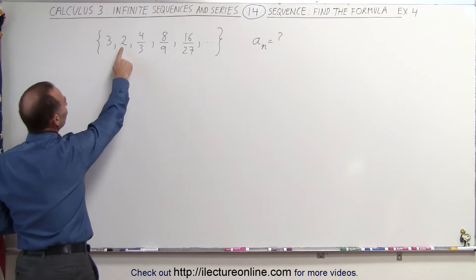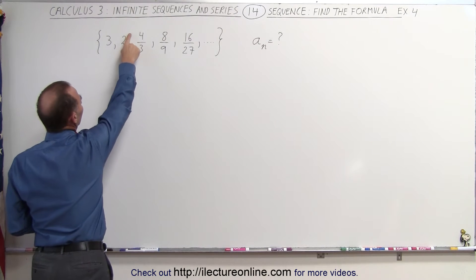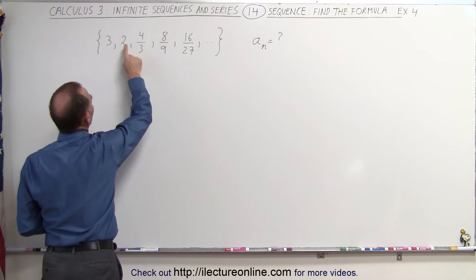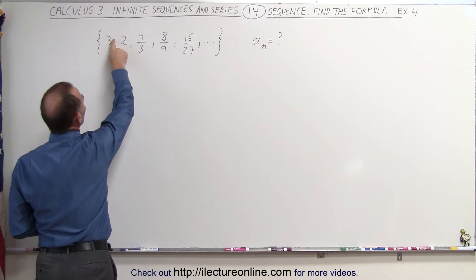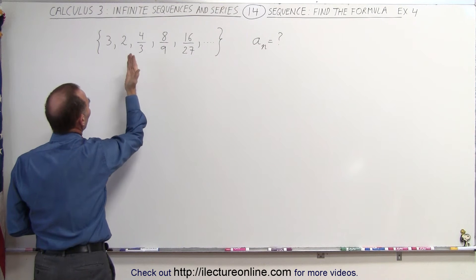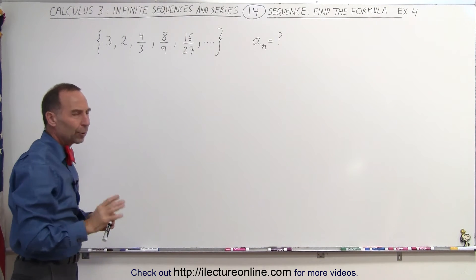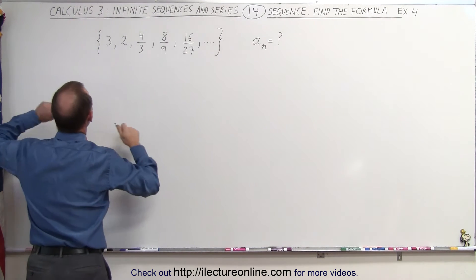Now I do see a 2 here. This could be 2 to the first power versus 2 to the second power. And then here I can imagine this to be 2 to the zero power, which is a 1, 1 times something else. So I'm going to rewrite the sequence a little as follows.